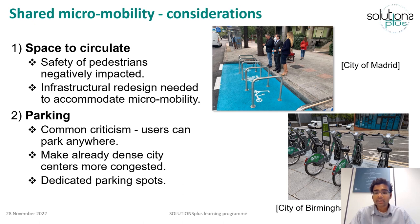There are two aspects to consider in terms of infrastructure needed for micro mobility services: space to circulate and parking. Safety of pedestrians is negatively impacted where micro mobility vehicles are used. To adapt present and future infrastructure, it is vital to protect the sidewalks and ensure micro mobility users can ride safely without using the footways. One of the most common criticisms related to micro mobility is that users park them improperly and simply leave them in the middle of nowhere, putting pressure on already scarce road space. Therefore, dedicated parking spaces have to be installed and properly regulated.